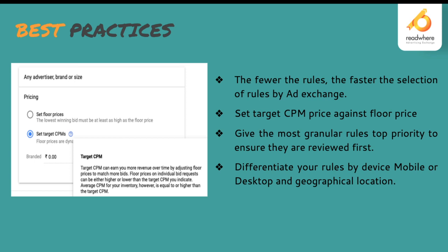An important best practice is choosing set target CPM over set floor price. The difference is that set target CPM takes an average and ensures bids match that CPM, earning you more revenue over time by adjusting floor prices to match your bids. A floor price is an individual bid request that can be either higher or lower than the target CPM. Fewer rules mean faster decision-making — give the most granular rule top priority and differentiate your rules by device (mobile/desktop) and geographical location.